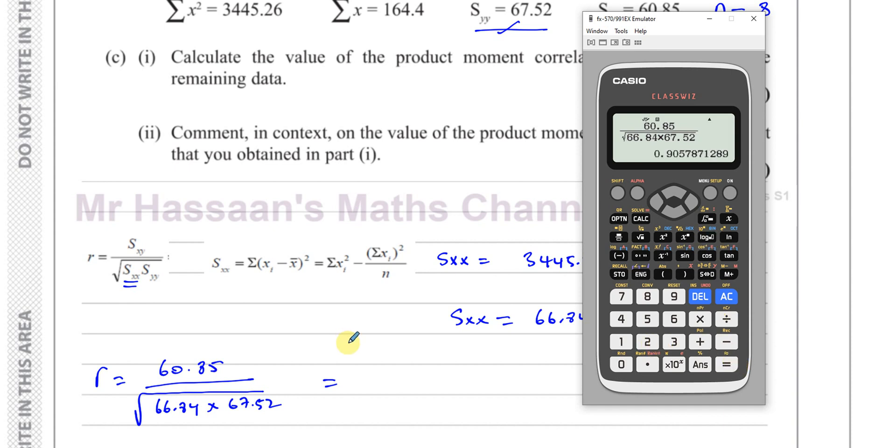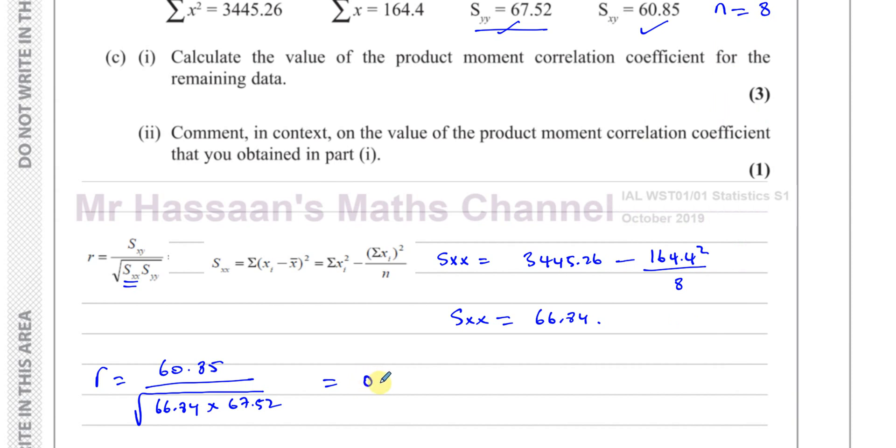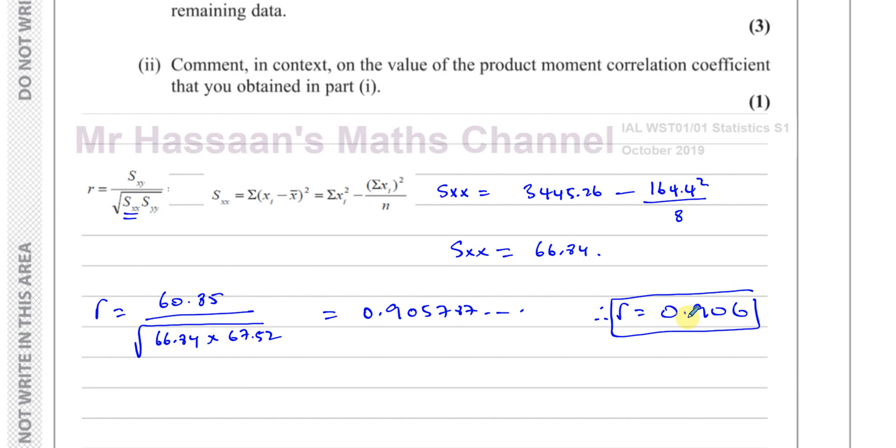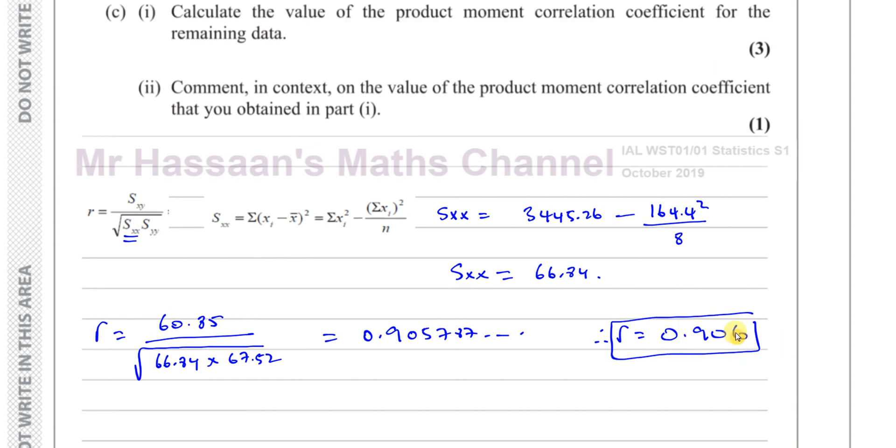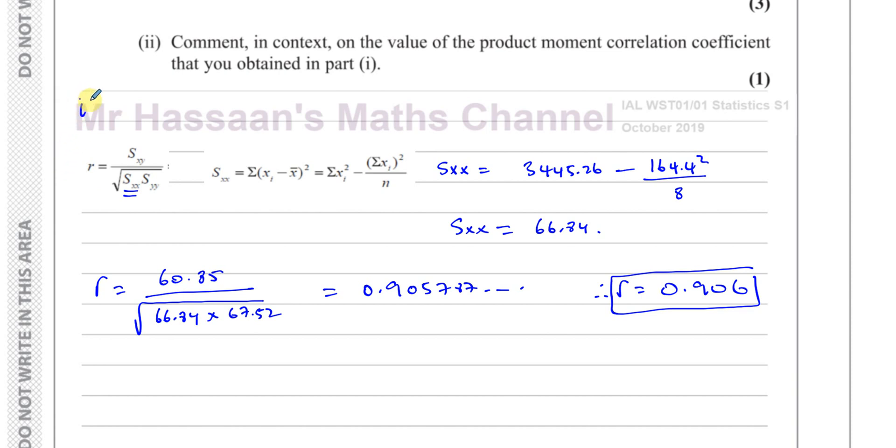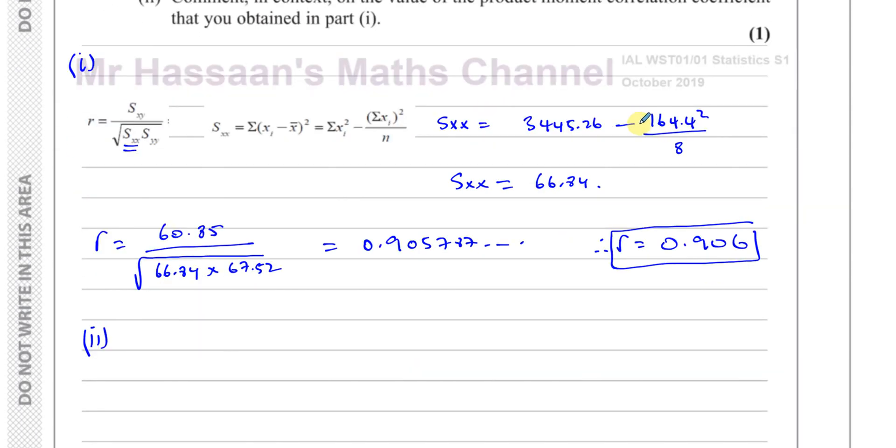And that gives us 0.905787. Therefore we can say R is equal to 0.906 to 3 significant figures. So that actually shows very strong correlation, very strong positive correlation, actually. So it says this is part one, found what R is. And then part two says comment on the value of the PMCC we found in part one. So we can say that R equals 0.906. We can mention that it has very strong positive correlation.